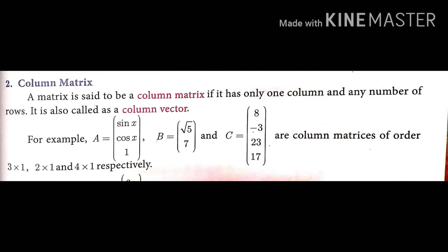The second type is column matrix. A matrix that has only one column and any number of rows is called a column matrix — also called a column vector. For example, matrix A is [sin x, cos x, 1], matrix B is [√5, 7], and matrix C is [8, -3, 23, 17].